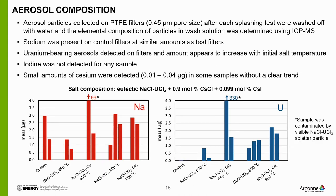For aerosol analysis, we collected aerosols on Teflon filters and tested both the eutectic NaCl-UCl3 salt and that salt doped with cesium and iodine at two initial salt temperatures of 650°C and 800°C. For sodium, we had similar amounts on the control filters as the test filters, indicating sodium-bearing dust in the glove box atmosphere made those results inconclusive. For uranium, it was not detected on control filters but was detected on test filters, and that amount appeared to increase with initial salt temperature. We did not detect any iodine in any sample, and found small amounts of cesium but without a clear trend.